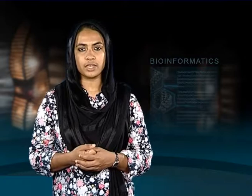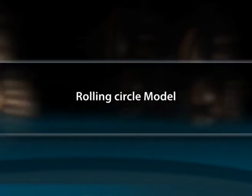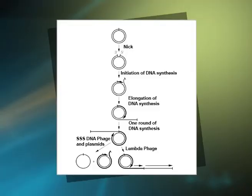There are two other types of replication in prokaryotes: the rolling circle model and the D-loop model. In the rolling circle model, also known as sigma replication, one strand of DNA is nicked by a nicking enzyme and the free 3' end is extended by DNA polymerase.